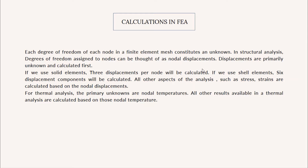For thermal analysis, the primary unknowns are nodal temperatures. If we run a thermal analysis, FEA first calculates nodal temperatures, and all other results — such as heat flux and temperature gradients — are then calculated based on those nodal temperatures. This is the overall process of calculations in FEA: primary unknowns are solved first, and subsequent results are derived from them.